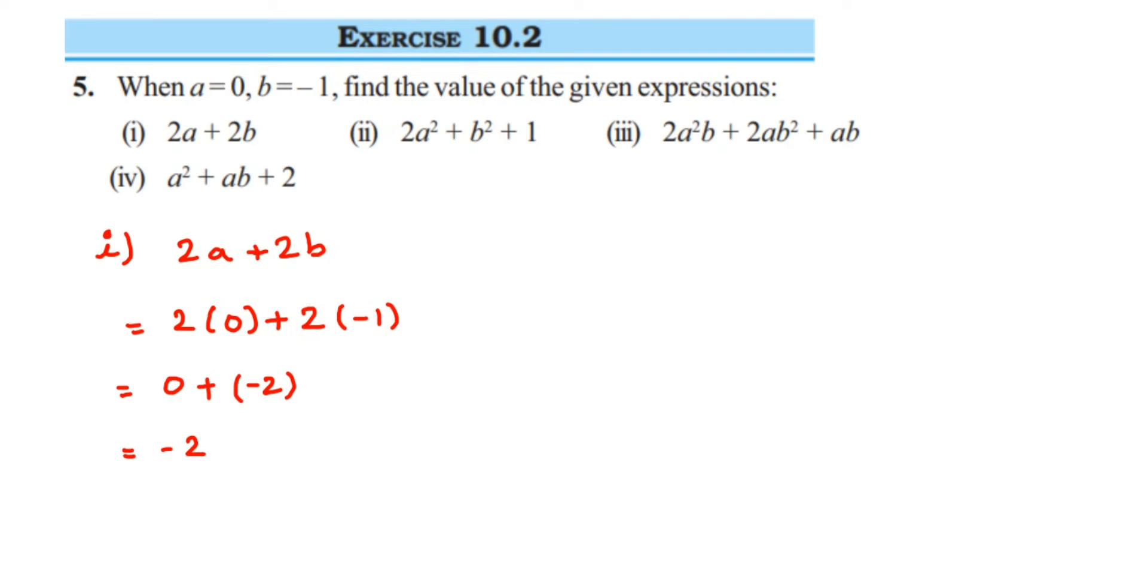Second one: it's 2a² plus b² plus 1. In place of a we're going to put 0, so it's 2 into 0² plus b value is minus 1, so minus 1² plus 1. Here I'm not going to solve because 0² is 0 itself and 0 into 2 is 0. So here we're going to get 0 plus minus 1², which means multiplying minus 1 two times. 1 times 1 is 1 and minus into minus will become plus, so plus 1 or you can just write down 1. So 1 plus 1 which is equal to 2. So 2 is the answer for the second question.